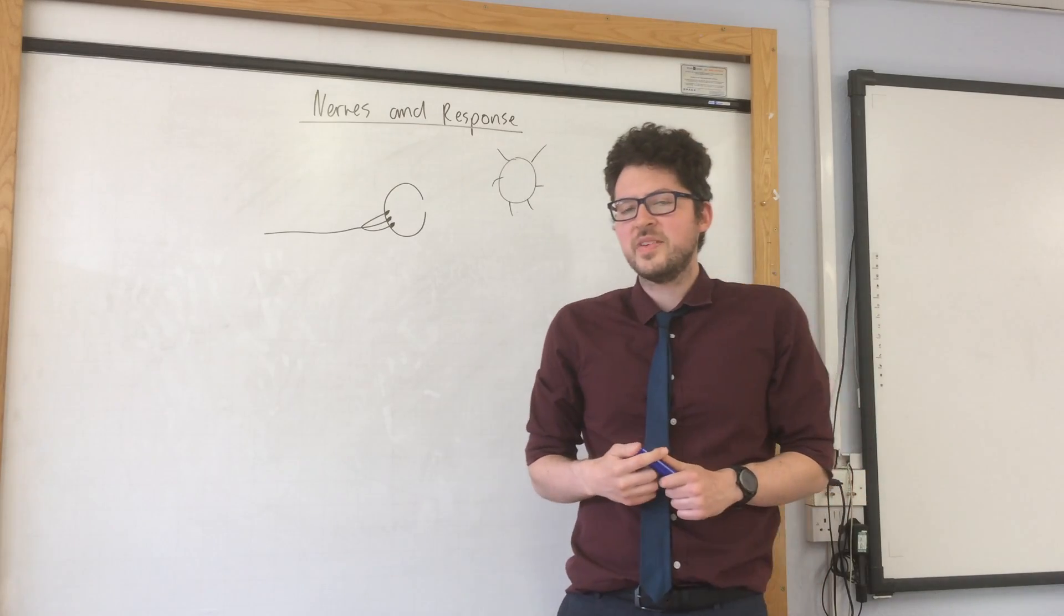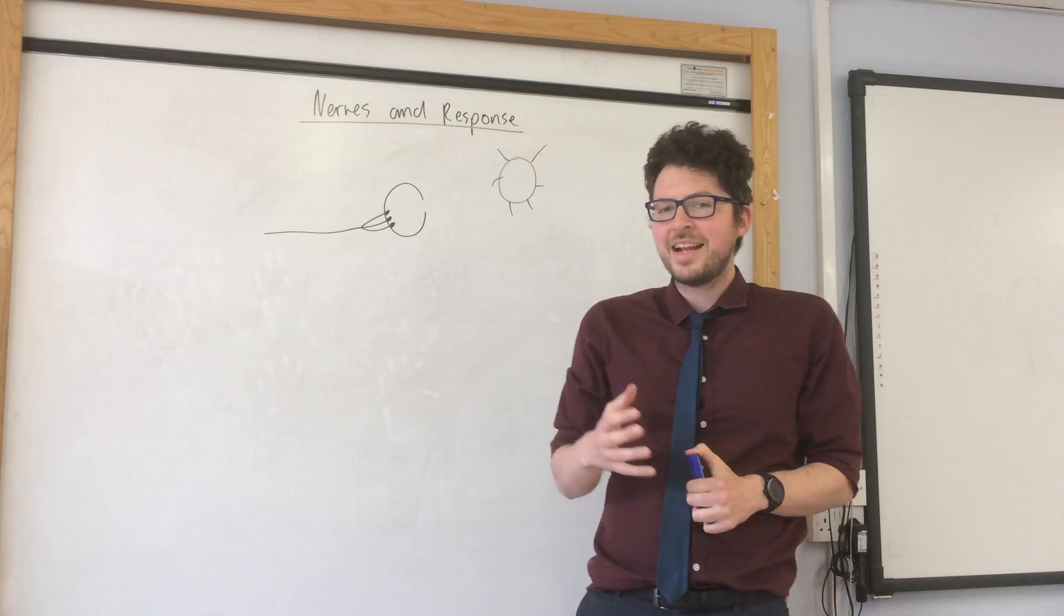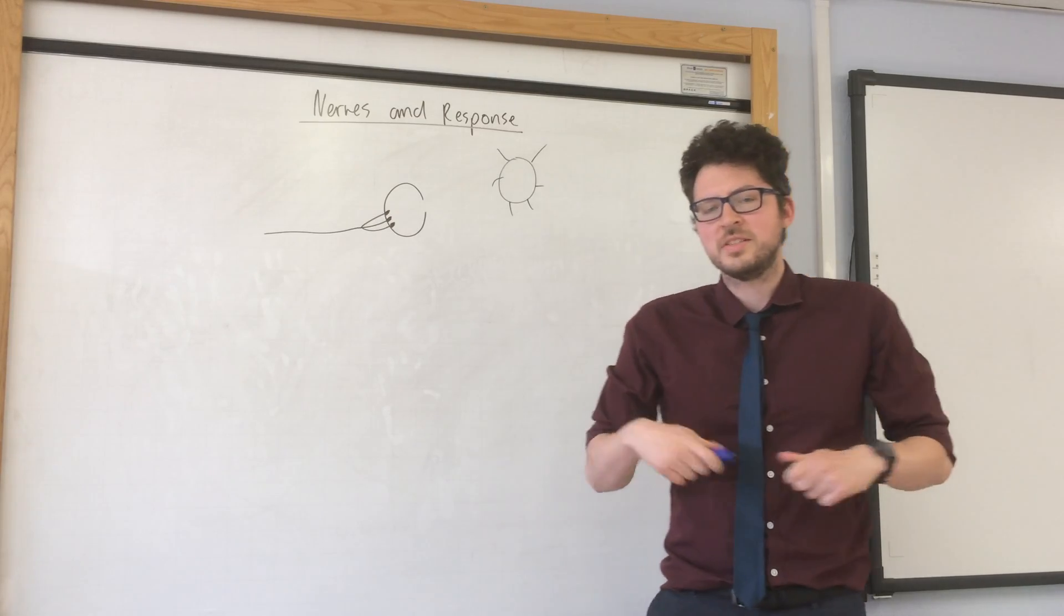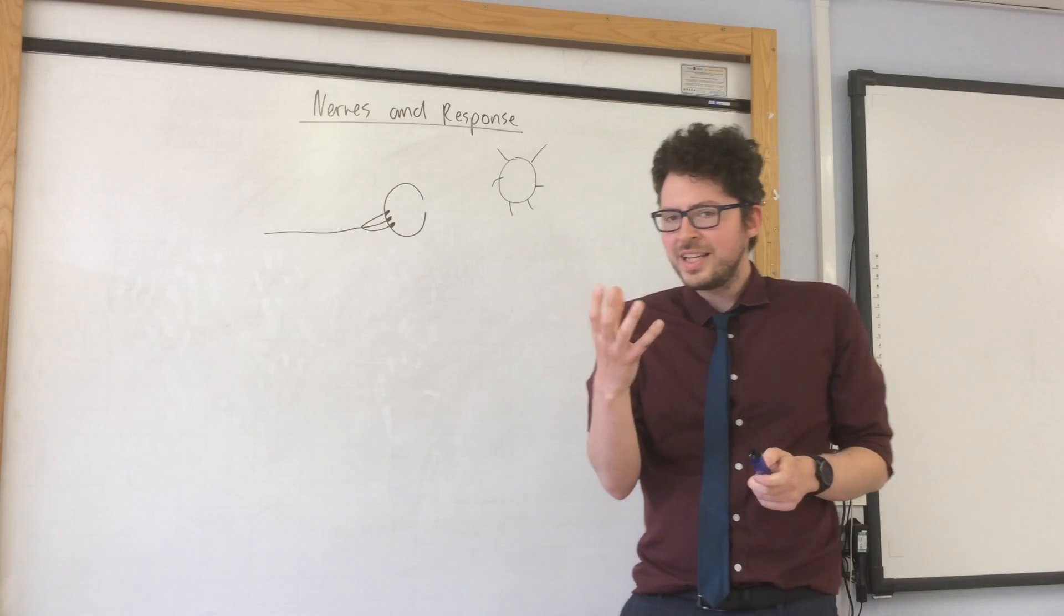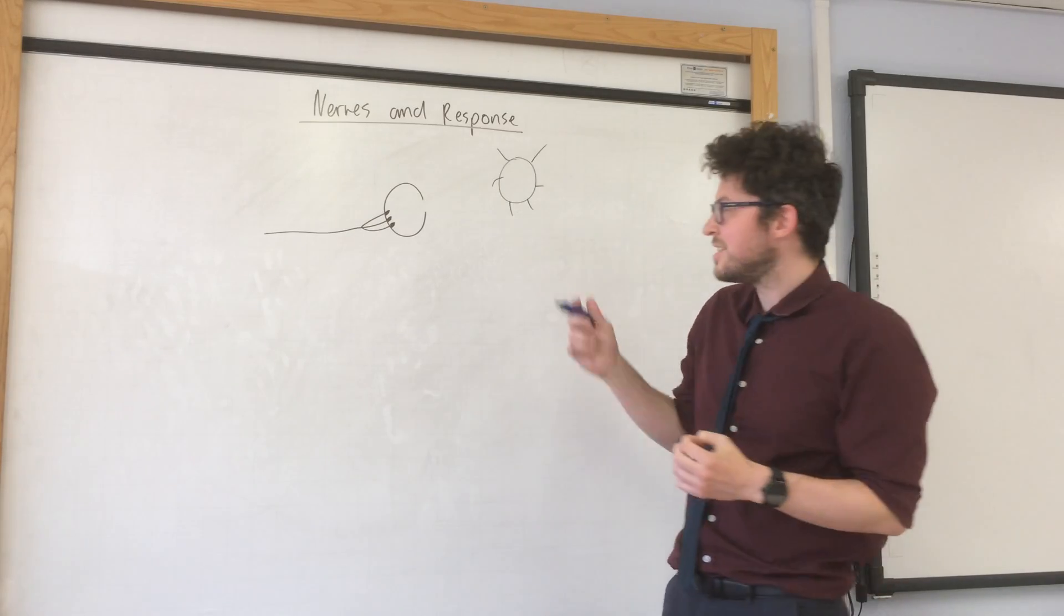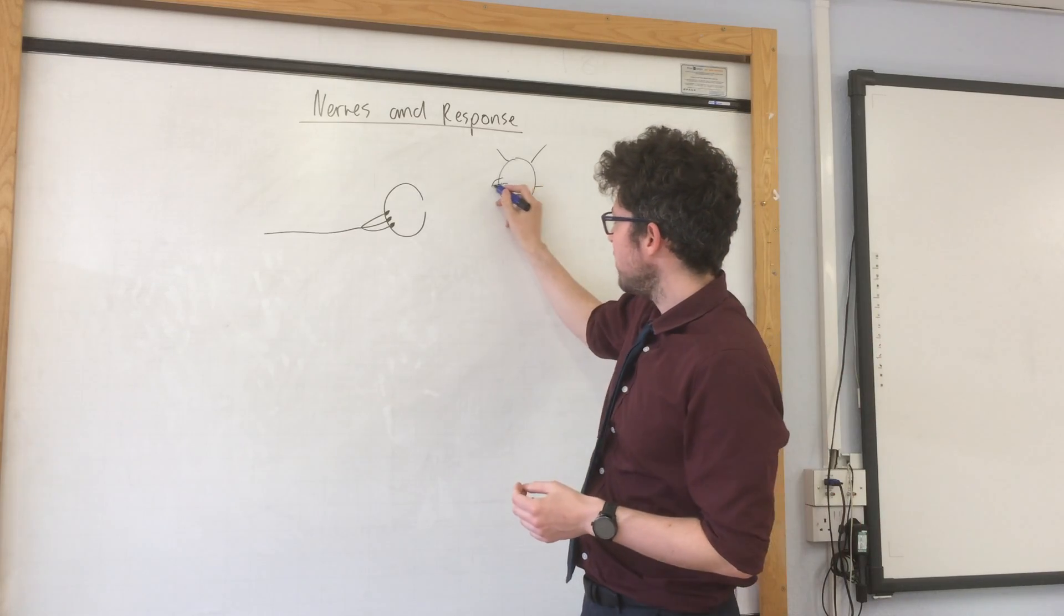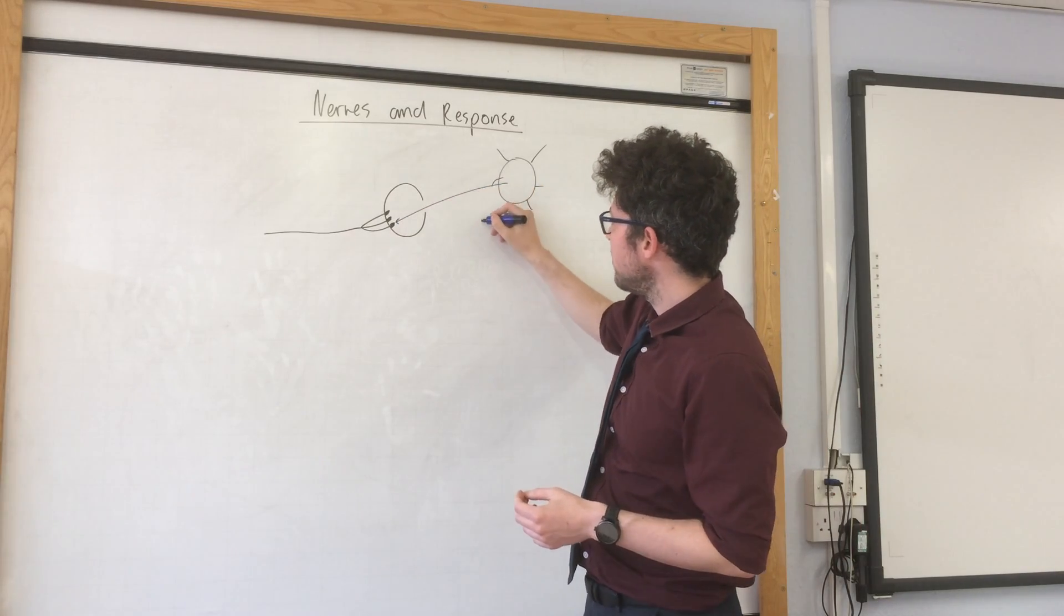Hello and welcome to Mrs E's Science Videos. In this video I'm going to be explaining how the nervous system allows us to respond to the environment. So we need to start with a stimulus. In this example the stimulus is going to be light from the sun.